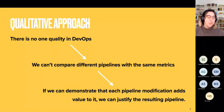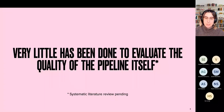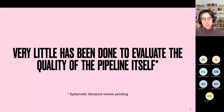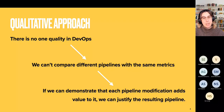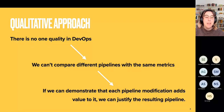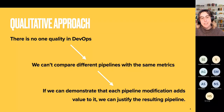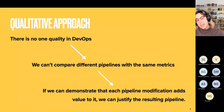We could take the quantitative approach, where we try to measure what would be quality inside one component of the pipeline, and then try to quantify it for every step. But that's problematic, because there is actually no one quality in DevOps. Every pipeline, every project is different, and DevOps is actually about having developers being able to create their own tools to work the most efficient way possible. Since there is no one quality in DevOps, we can't compare pipelines with the same metrics. So we decided to go with the qualitative approach, where we can demonstrate that each pipeline modification adds value — thereby justifying the resulting pipeline.